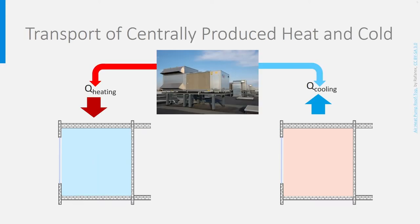Very often, the equipment generating heat and cold is not placed in the room, but somewhere central in the building — like a home boiler placed in the toilet or the attic. In office buildings, you often see big technical rooms on the roof where the boilers and cooling machines are placed. This means we need piping to bring the heat and cold to the rooms, and we need to choose which fluid will be circulated in these pipes. Basically, we have the choice between only two solutions: air or water, which are abundant, cheap, and harmless in case of leakage.